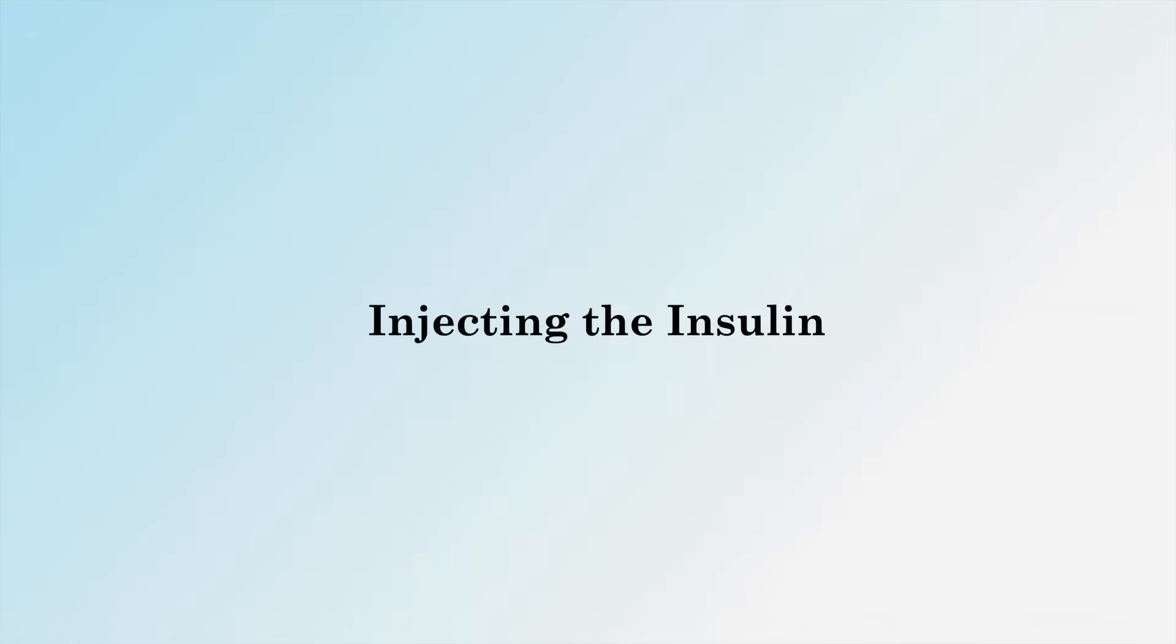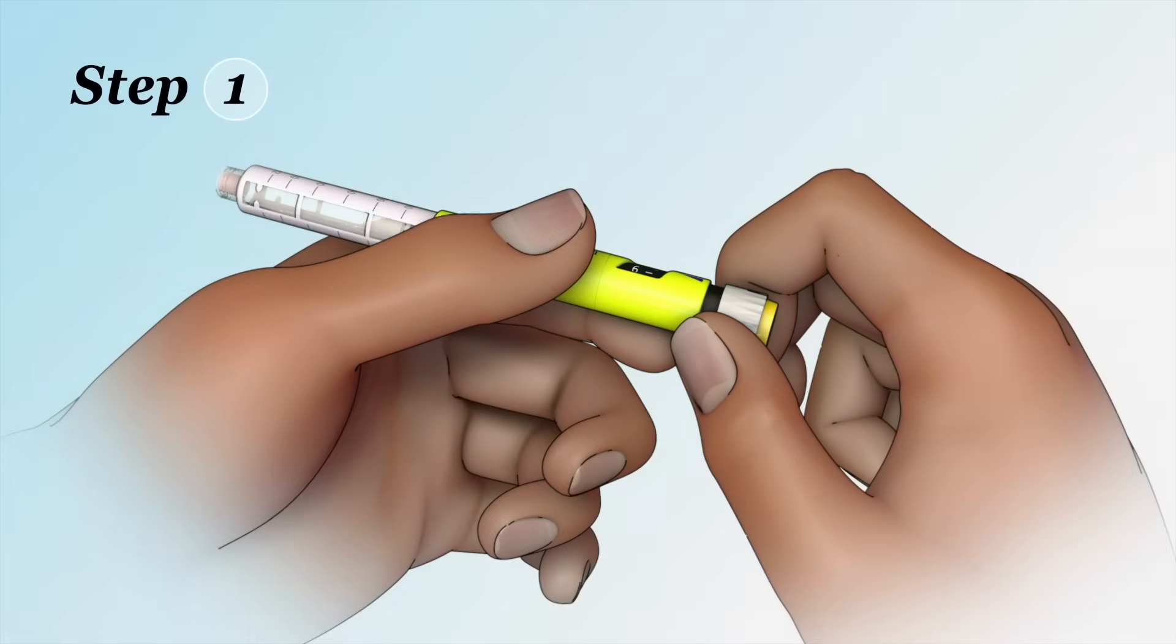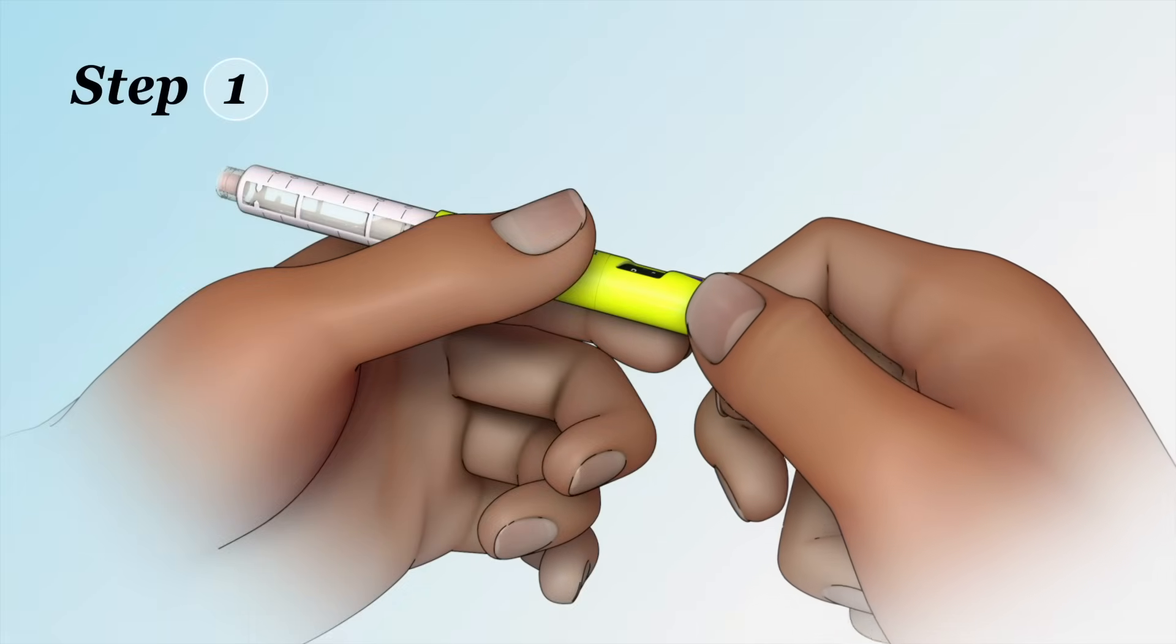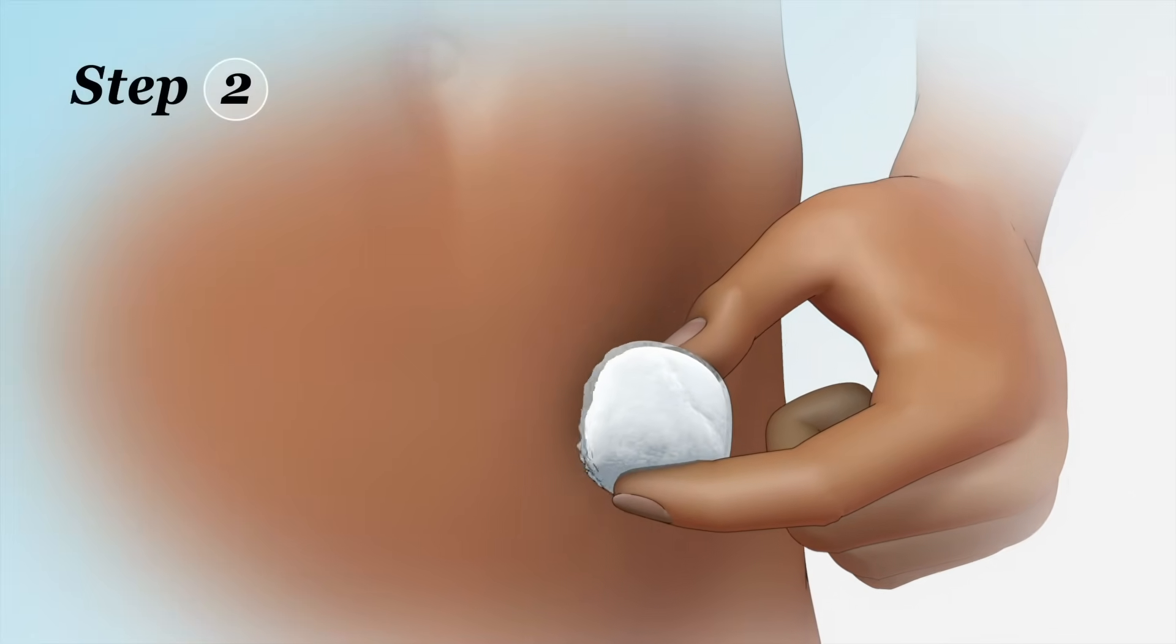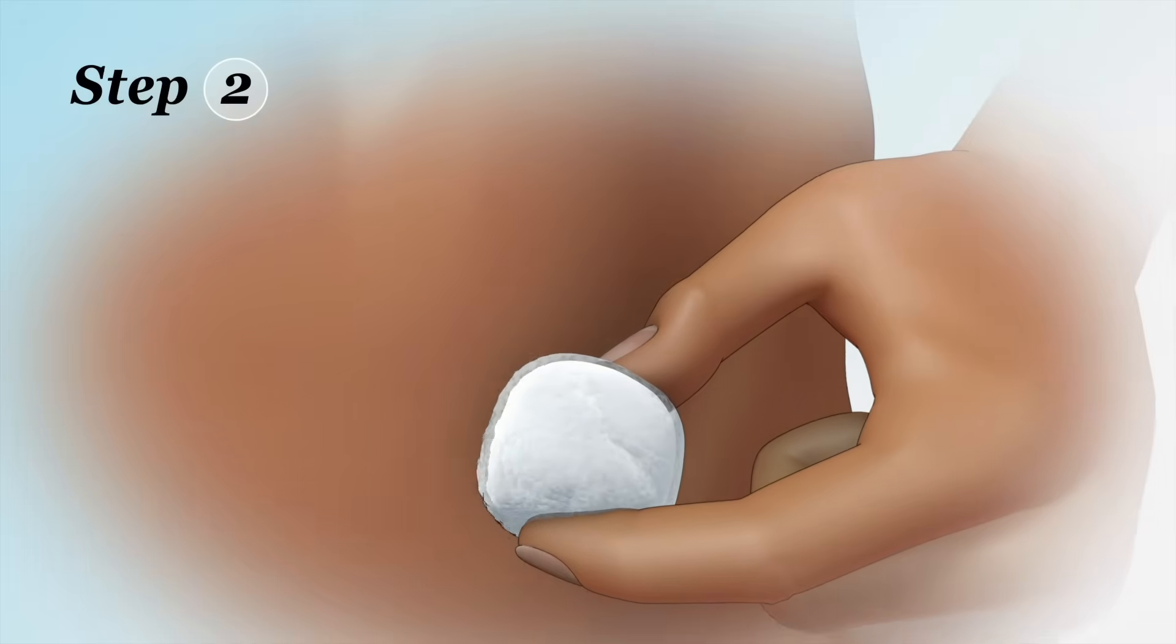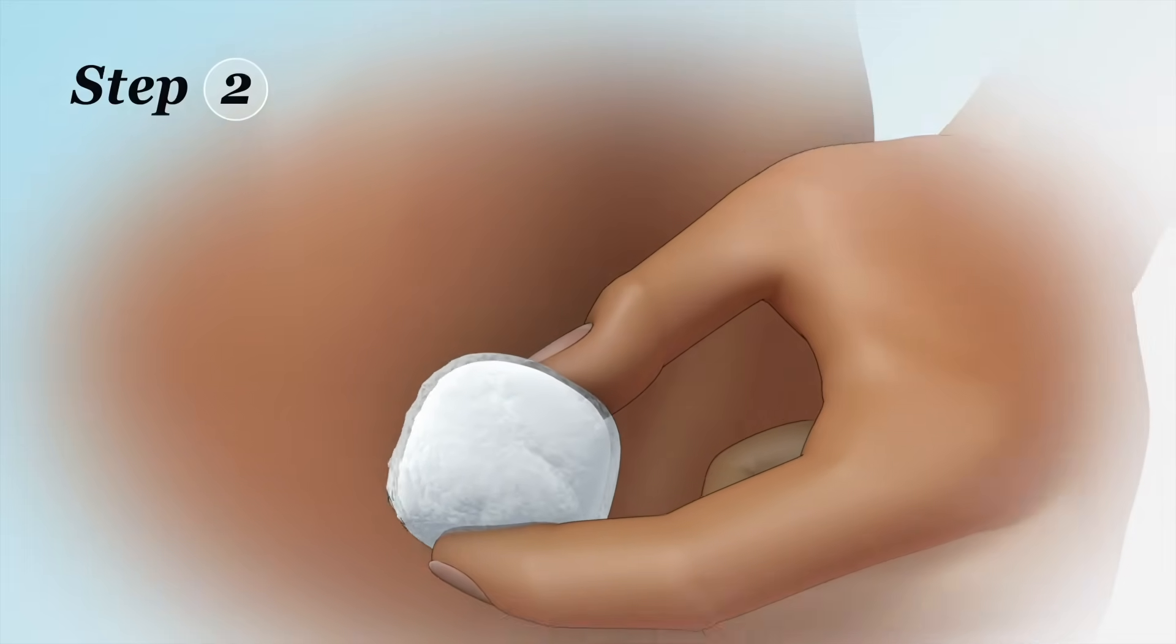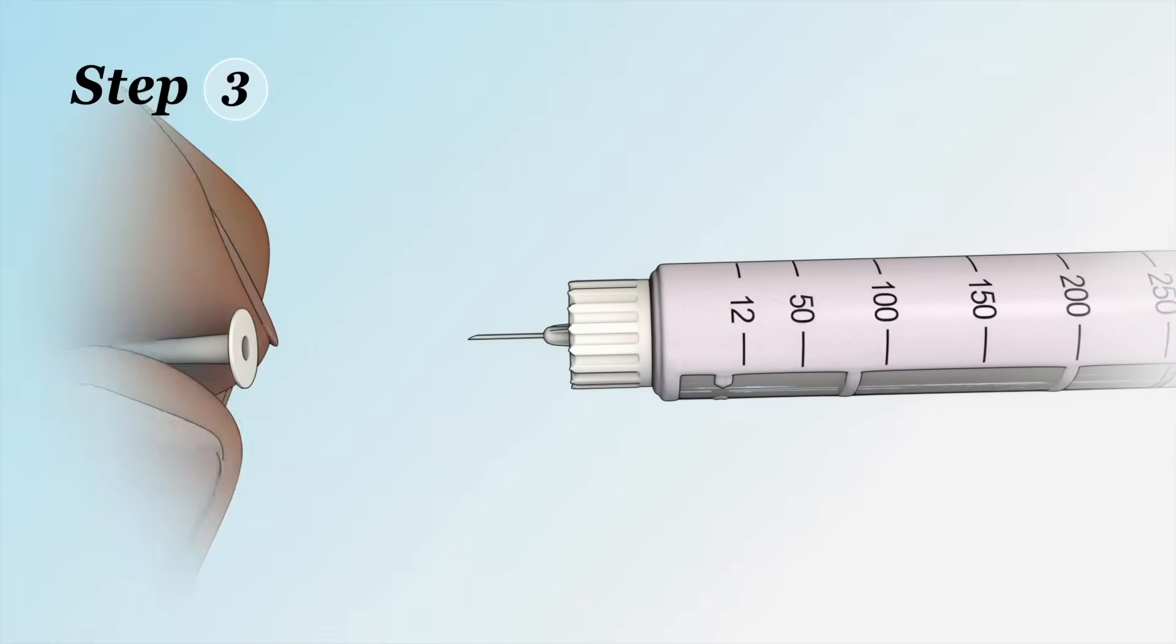Injecting the insulin. Step 1: Turn the dosage dial to the number of insulin units you need to inject. Step 2: Clean your injection site with an alcohol wipe. Use a circular motion to clean a spot about 2 inches wide. Step 3: If you replaced your pen's inner needle cap, remove it now.